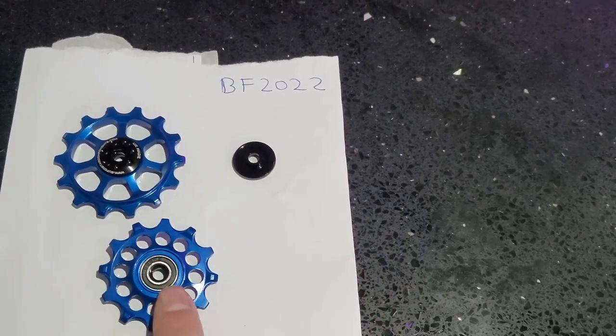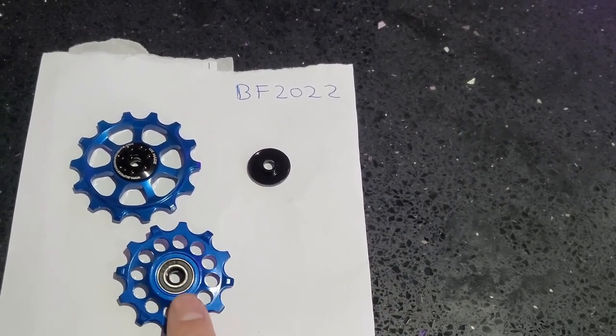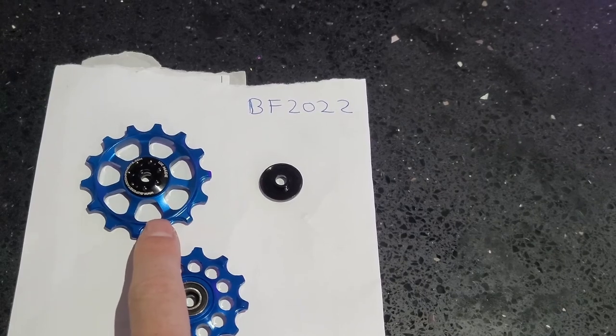The biggest difference with Eagle is you have this 12-tooth jockey wheel, and you have this 14-tooth jockey wheel as well.